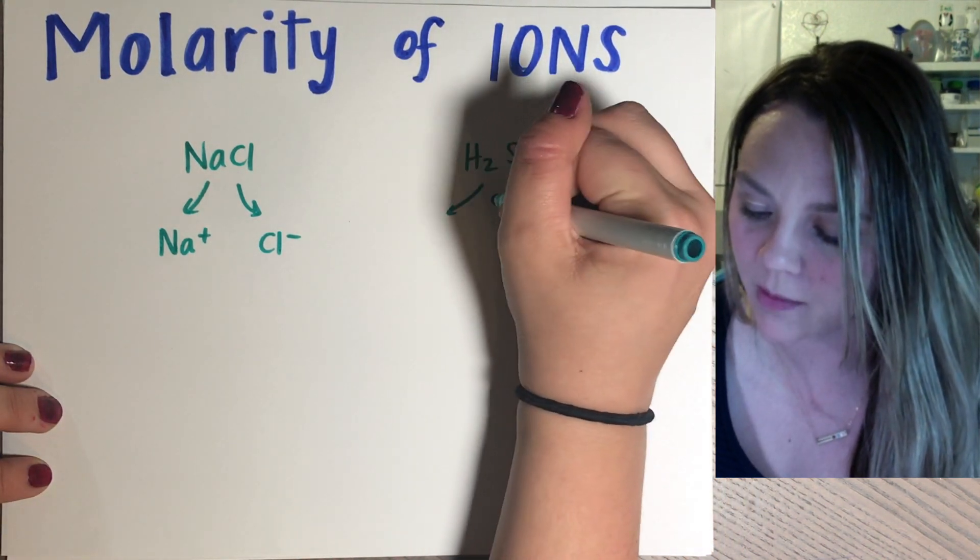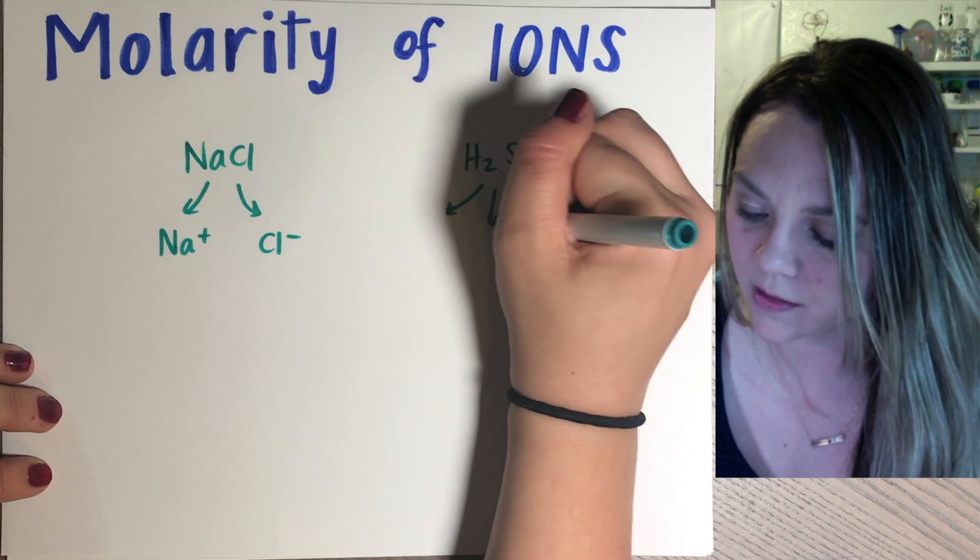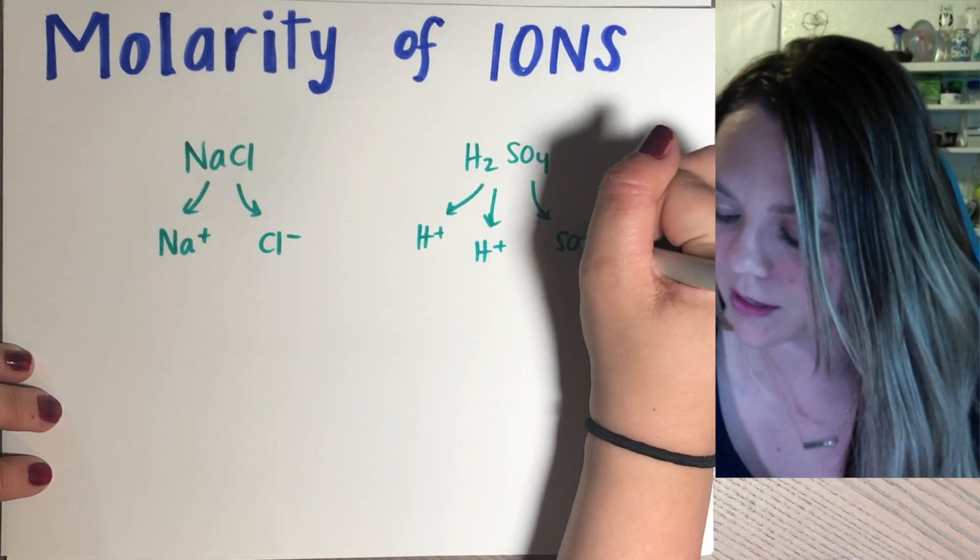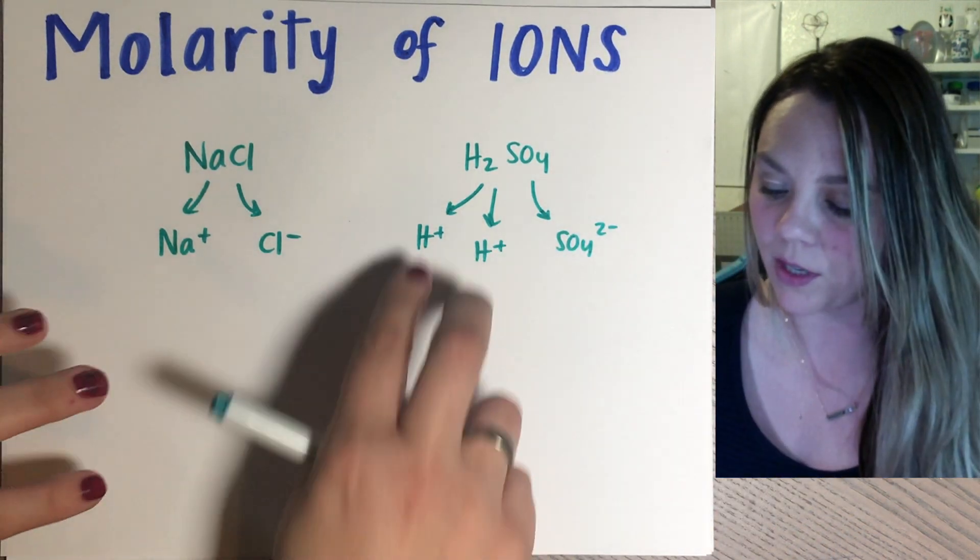When this breaks up, I'm getting three different ions. I'm getting H+, H+, and SO4 2-, so I'm getting three different ions in there, and two of them are both hydrogens.